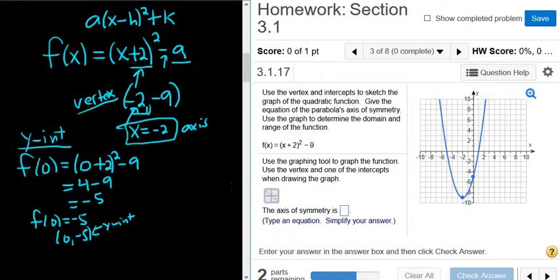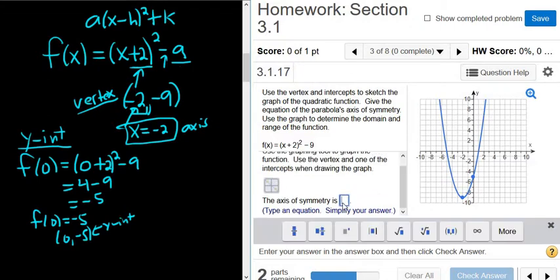The axis of symmetry is, well, we know that's x equals negative 2. Very important to write it as an equation. Apparently the homework knows that. They even say type an equation, which is really good. It's an invisible dotted line that cuts the parabola right in half. So x equals negative 2. I'm going to click check answer.